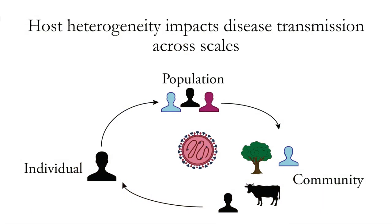What we've heard throughout this conference is that host heterogeneity can really impact disease transmission, and that can have a real scaling effect. Traits that individuals have can vary at the population level with implications for disease transmission and prevalence, and community interactions in your ecological community have the potential to feed back on those traits with consequences for disease.